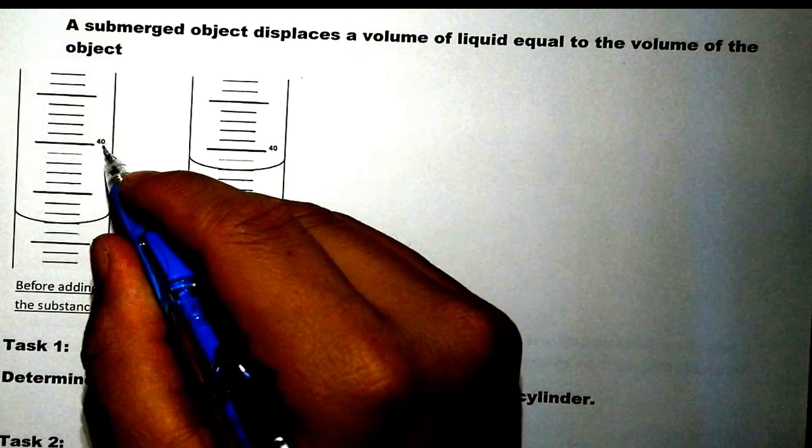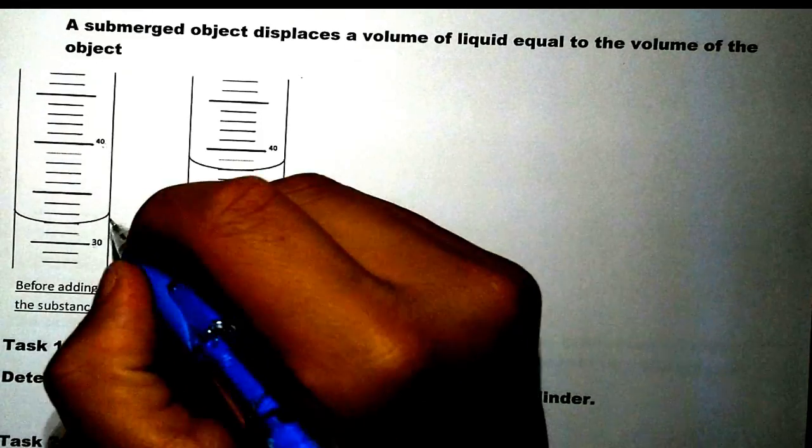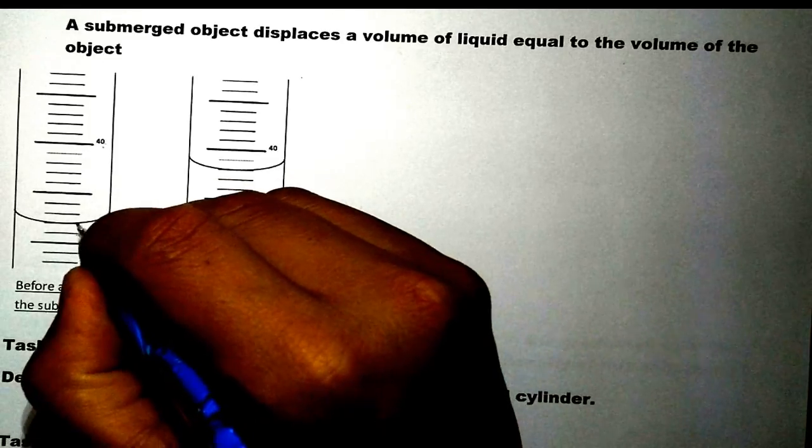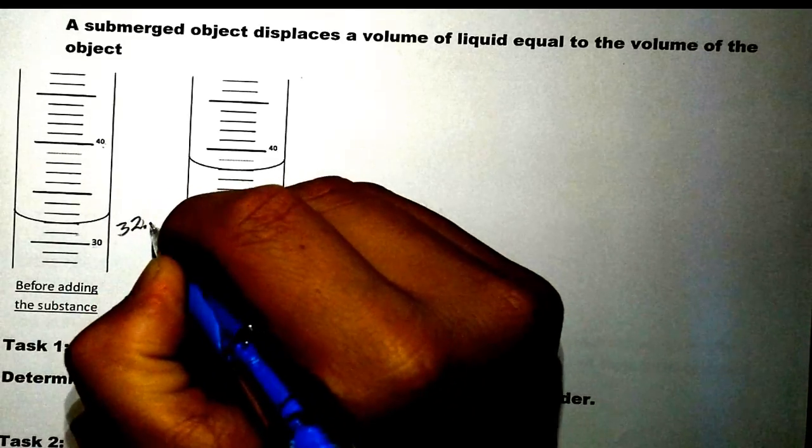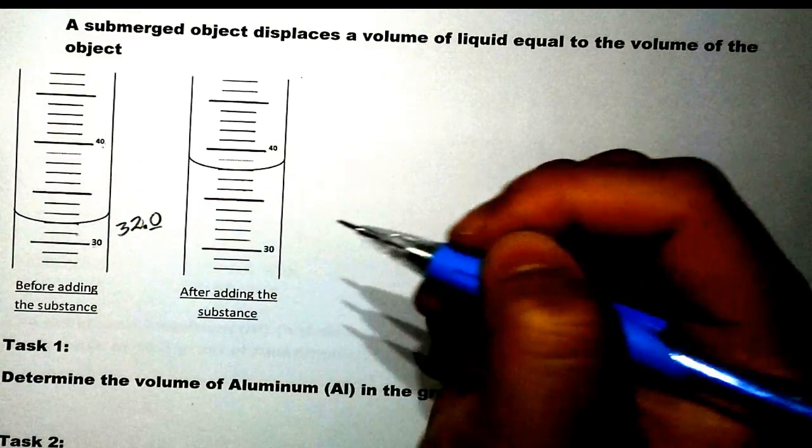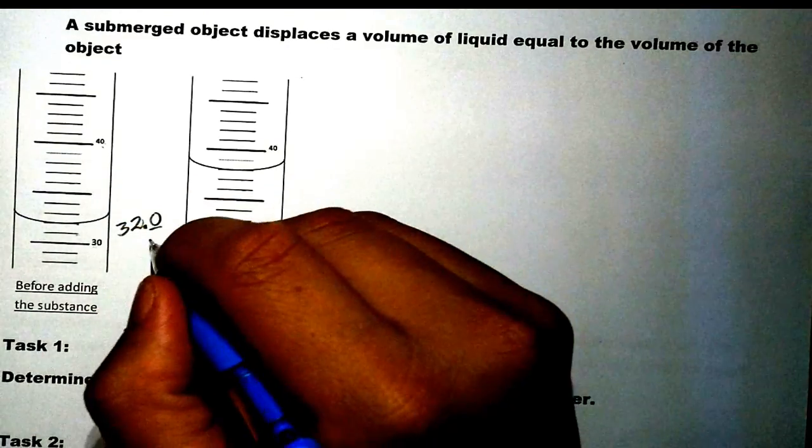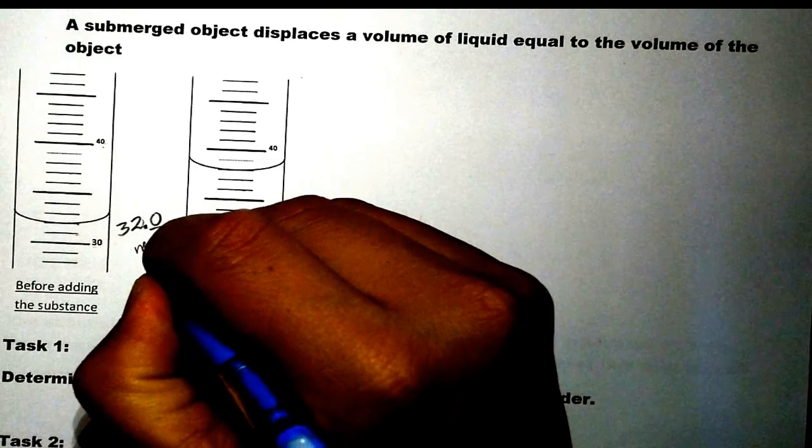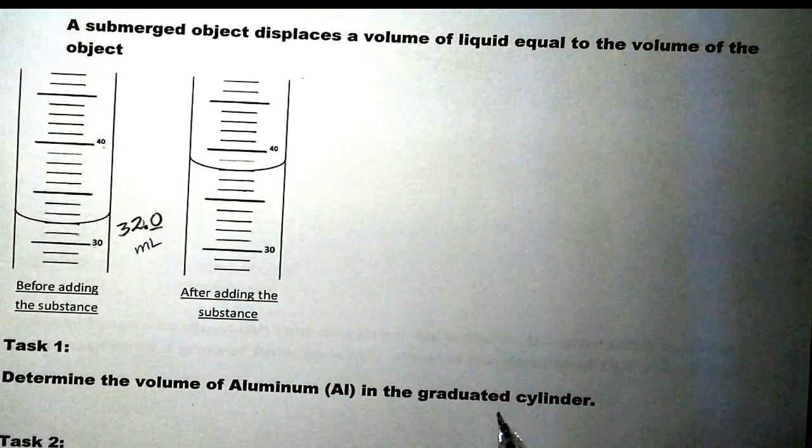So in this case I have our reading from 30 all the way to 40. Of course each one will be 1. So we have 31, 32. But I have to estimate on the last digit, which is not there. And it is 0. It is on the line. So that is our initial reading, and the unit of course is mL because we're measuring in the graduated cylinder.